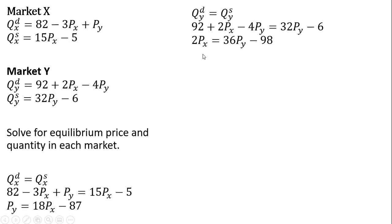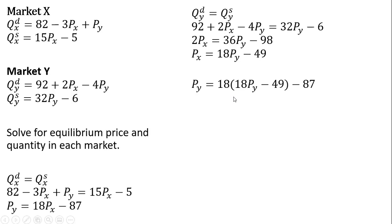Dividing everything through by 2. The next step, I'm going to take this result — this 18 P_Y minus 49 — and plug it into the equation for P_Y down here. So making that substitution, substituting one equation into the other, we get this result.